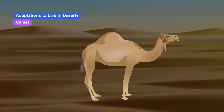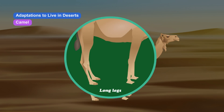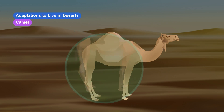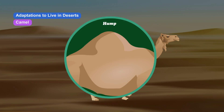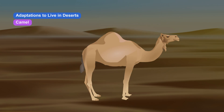The camel has several adaptations. It has long legs to keep the body away from the heat of the sand and to walk easily on sand without sinking. It has a hump on its back which stores fat as a food reserve. Camel can drink a large amount of water at a time and excretes very less urine. It does not sweat and can live without water for a long time.